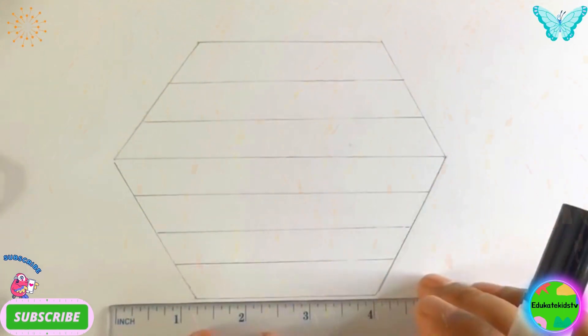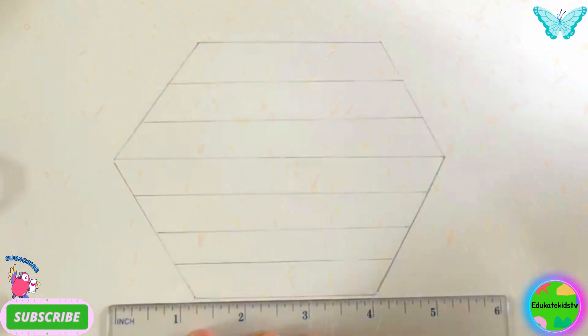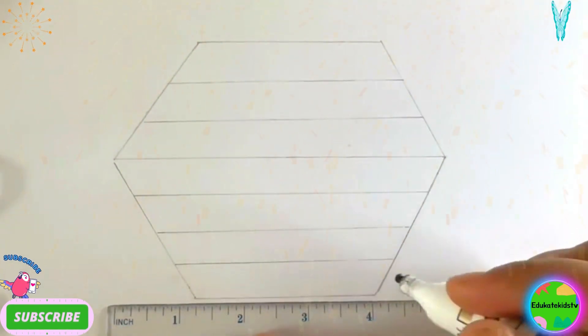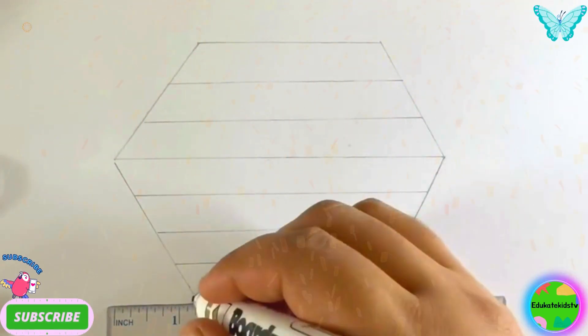Wow! Hooray! Now let's start drawing. This is my black marker and ruler. Let's start drawing hexagon.